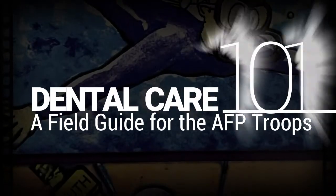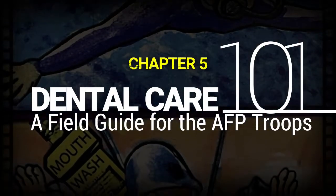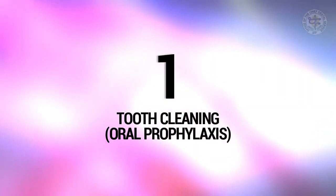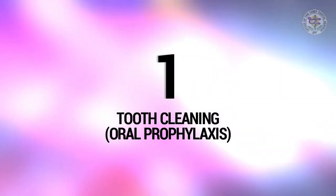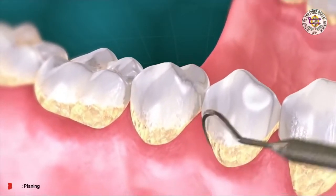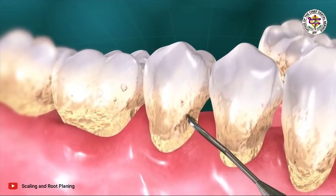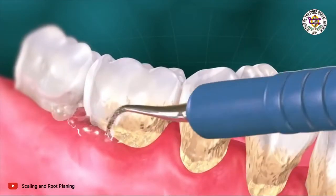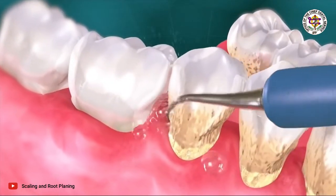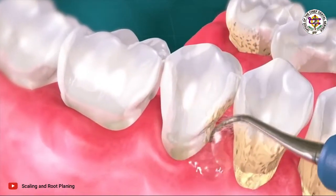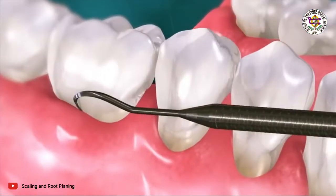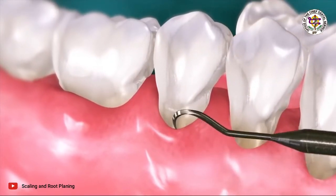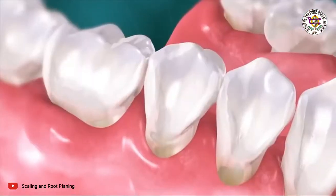Chapter 5: Dental treatments available at the different dental treatment facilities. In all major services, tooth cleaning or oral prophylaxis is a procedure in which bacterial plaque and tartar is removed from the surface of the teeth with the help of scaling and polishing. Oral prophylaxis has gained tremendous popularity in recent years due to the introduction of ultrasonic scaling instruments and other high-tech devices.